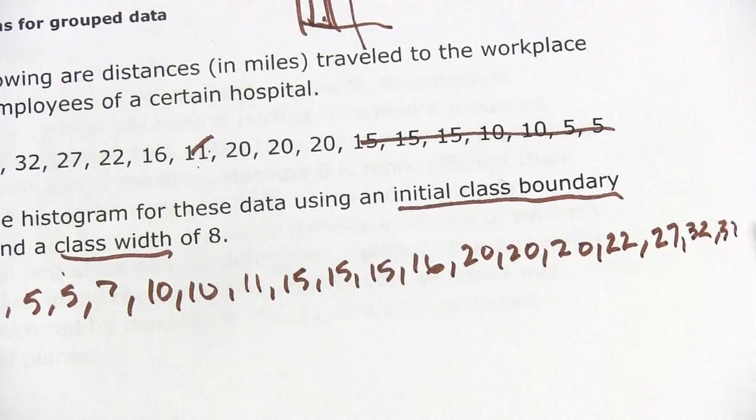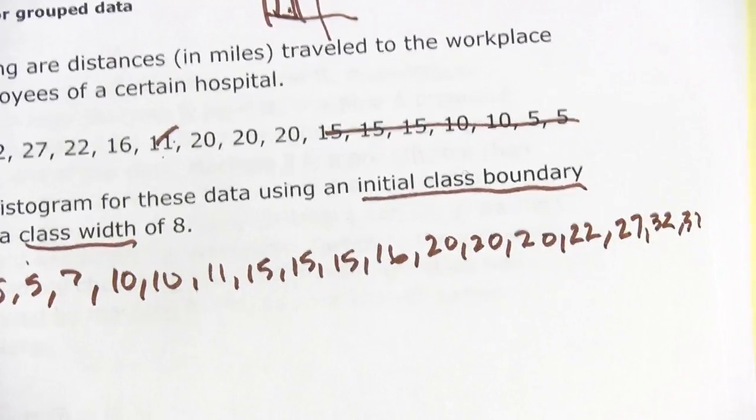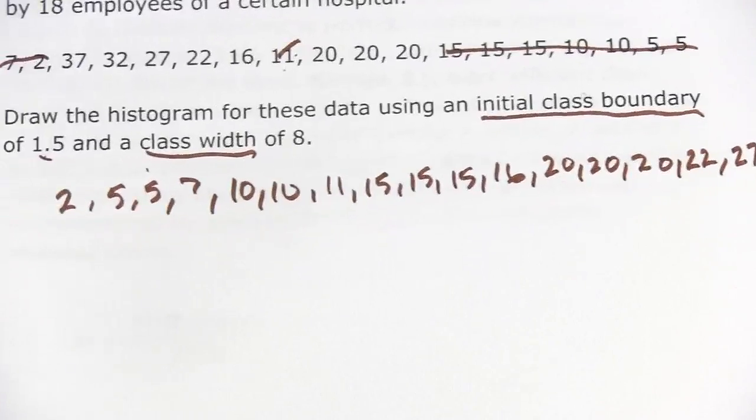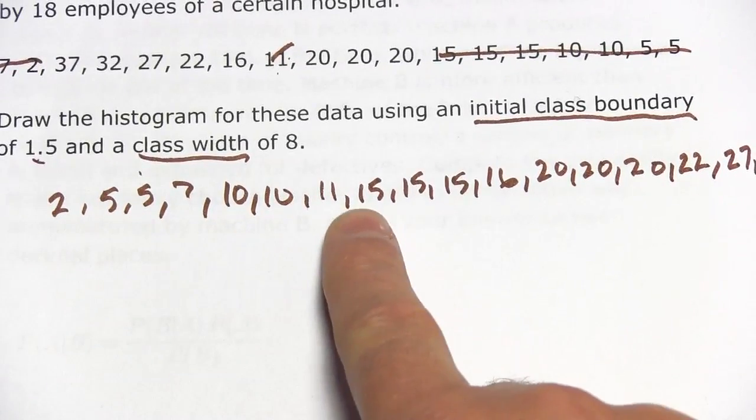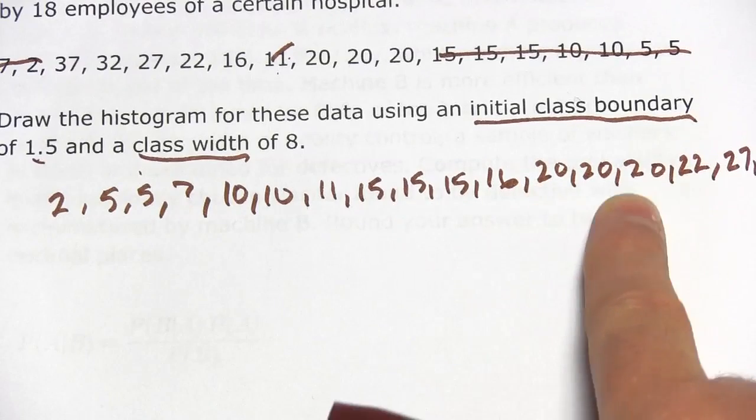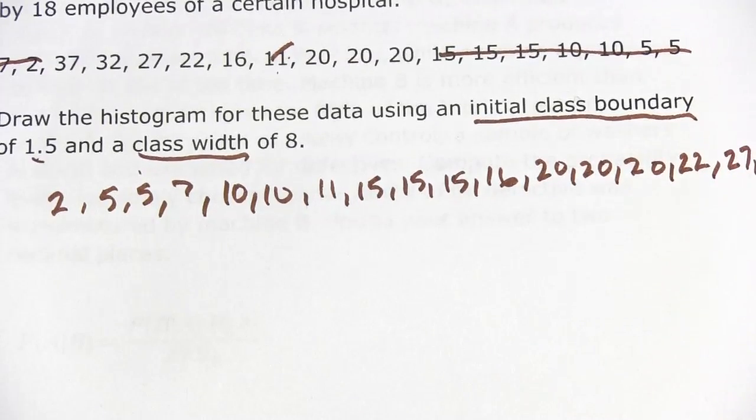And a 37. Okay, running out of room here on my page. But that's the data reordered. Let me just count, make sure I got them all. So 2, 4, 6, 8, 10, 12, 14, 16, 18. Looks good.